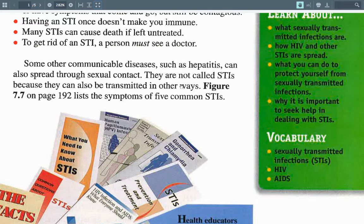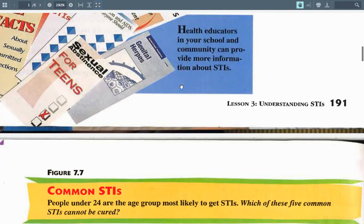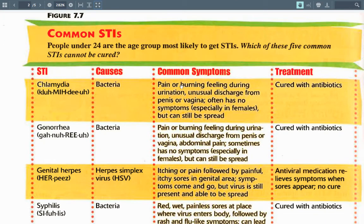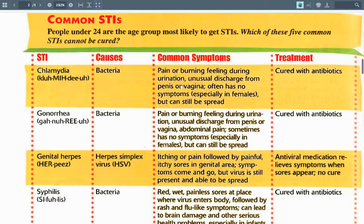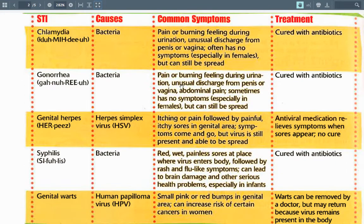Figure 7.7 on page 192 lists the symptoms of five common STIs. People under the age of 24 are most likely to get STIs. Chlamydia is a bacteria. Symptoms include pain or burning during urination, unusual discharge from the penis or vagina, and abdominal pain. Sometimes there are no symptoms, especially in females, but it can still be spread. Cured with antibiotics. Gonorrhea is also a bacteria with similar symptoms — pain or burning during urination, discharge, and abdominal pain — sometimes no symptoms especially in females. Also cured with antibiotics.